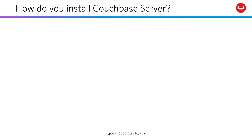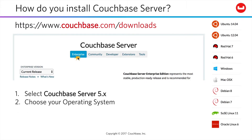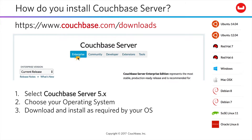So how do you install Couchbase Server? Go out to couchbase.com/downloads, select Couchbase Server 5 Enterprise Edition, choose your operating system — lots available — and then download and install as required by your particular OS.